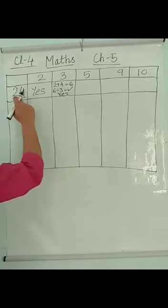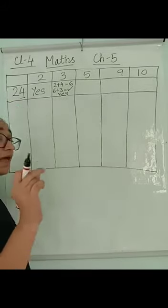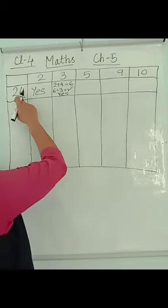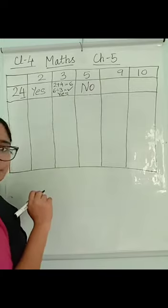For 5, again, ones place has to be checked. Ones place should have 0 or 5. Is there 0 or 5? No, there isn't. So no.